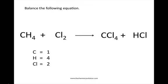On the product side of our chemical equation, we have one carbon atom, one hydrogen atom, and five chlorine atoms. Because we have one carbon atom on the reactant side and one carbon atom on the product side, carbon is already balanced.